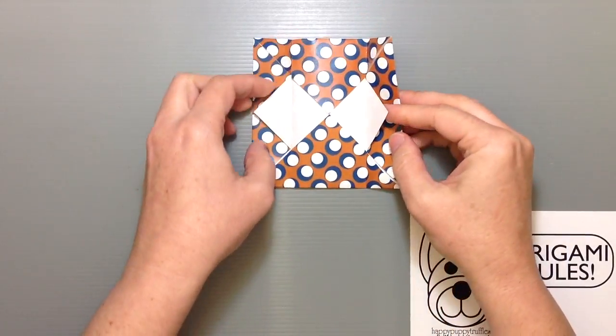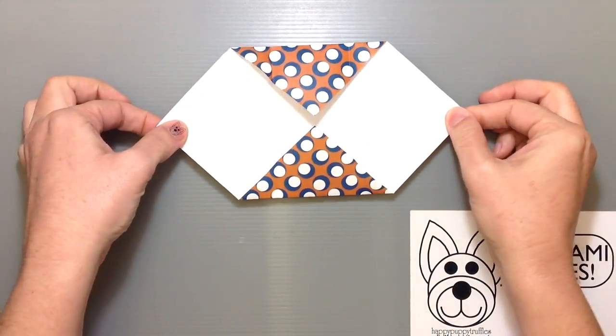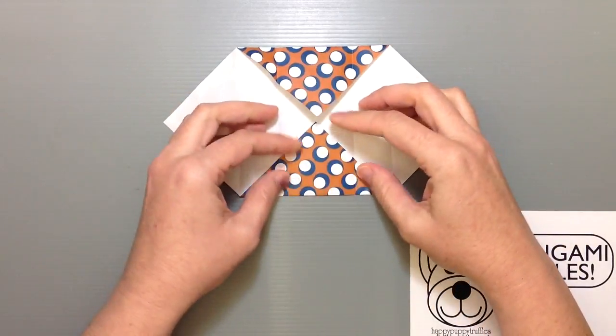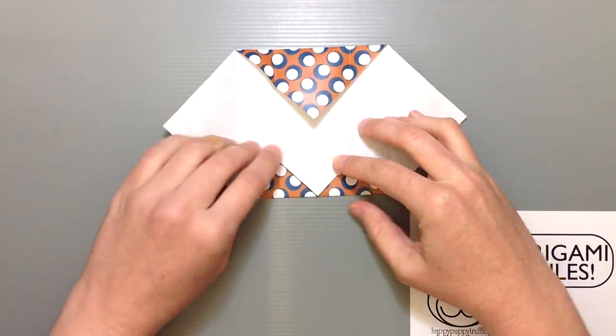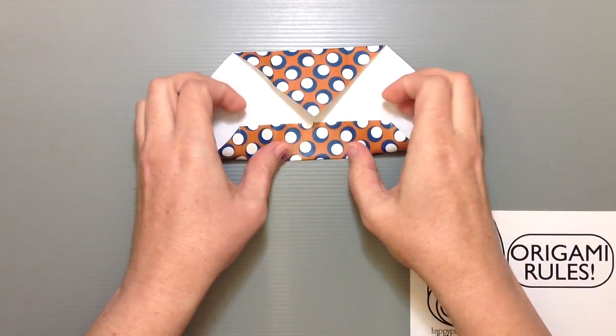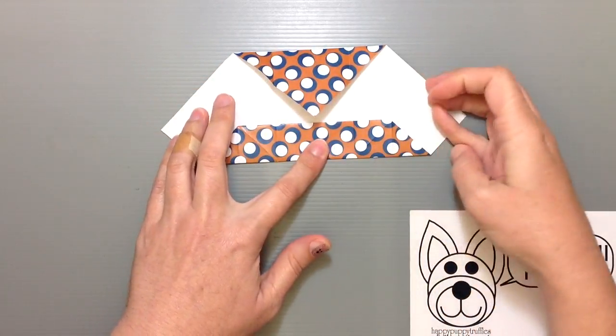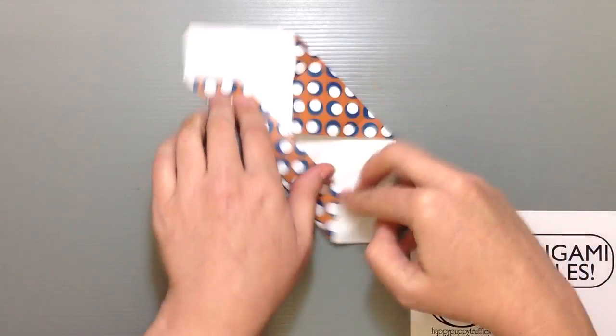Then open everything up and take these two little tabs here and pull out so we get something like this. Now take the tip and fold it straight back, get a crease, and then fold straight up from there, keeping in line with all the other vertical creases.